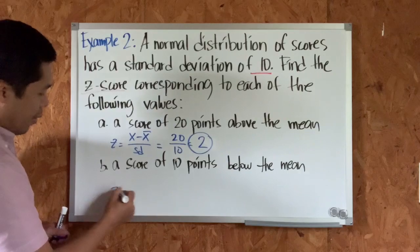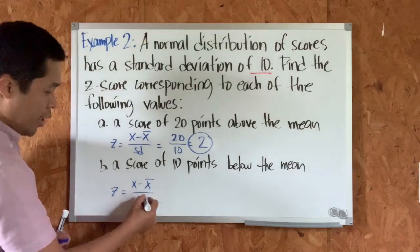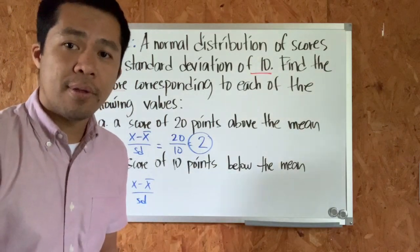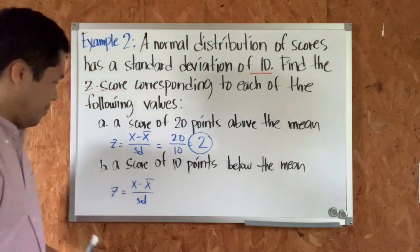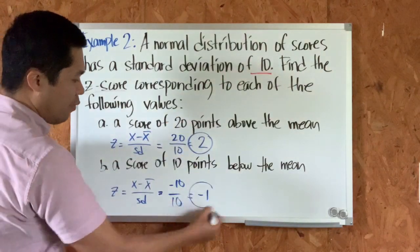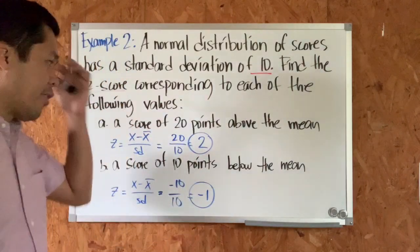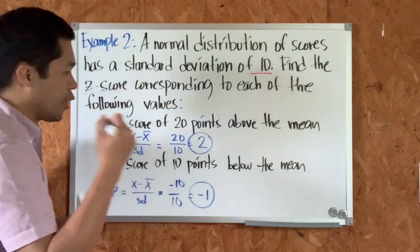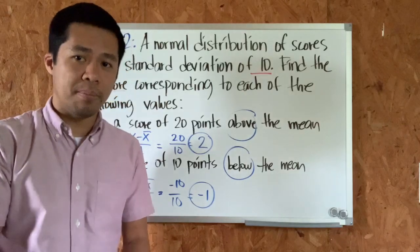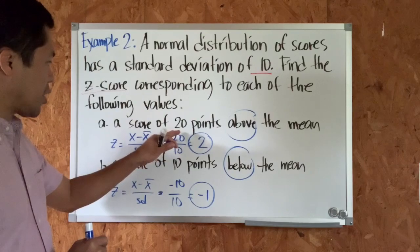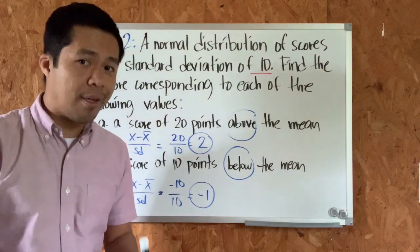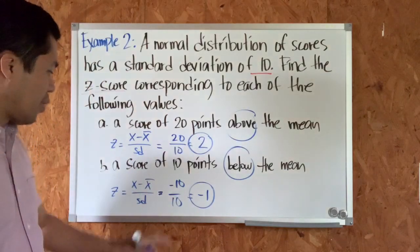For letter b: a score of 10 points below the mean. Again, we don't know the score or the mean, but we know the observation is 10 points below the mean. If it's below the mean, it's negative. So it will be negative 10 over 10, which equals negative 1. When answering this kind of problem, pay attention to the keywords 'above' and 'below.' Above the mean means positive, below the mean means negative.